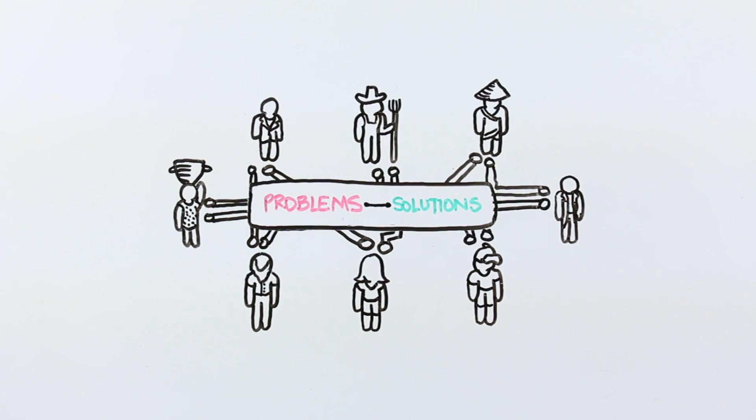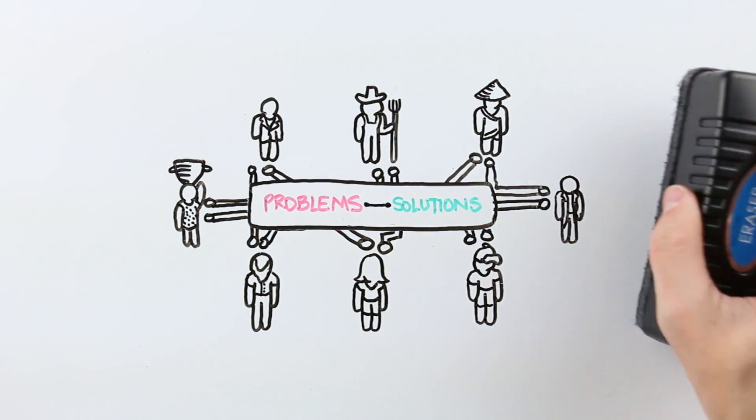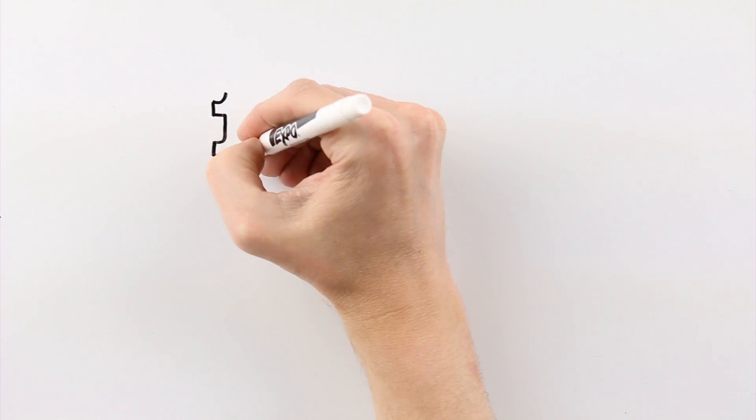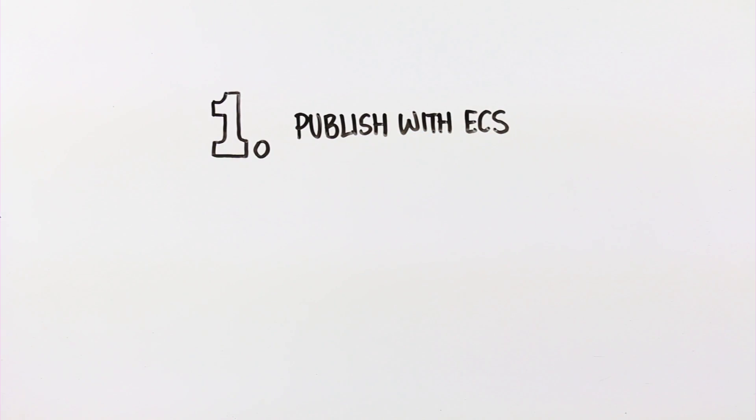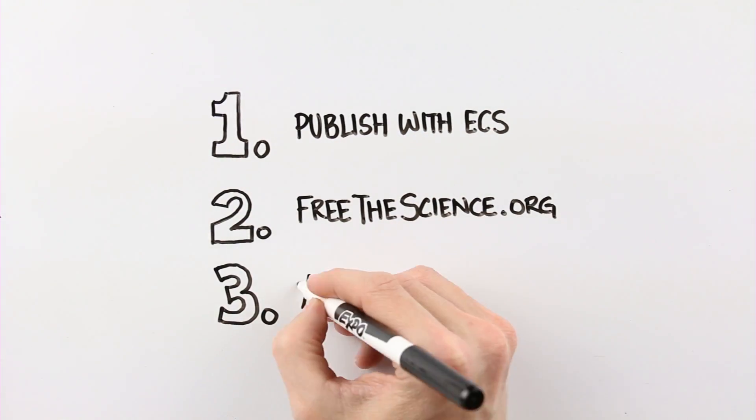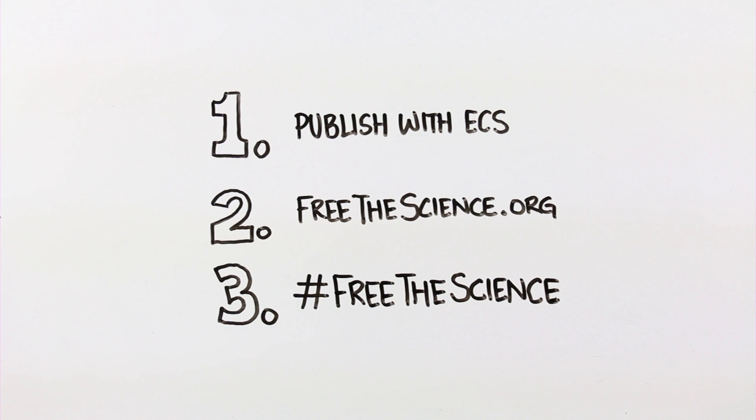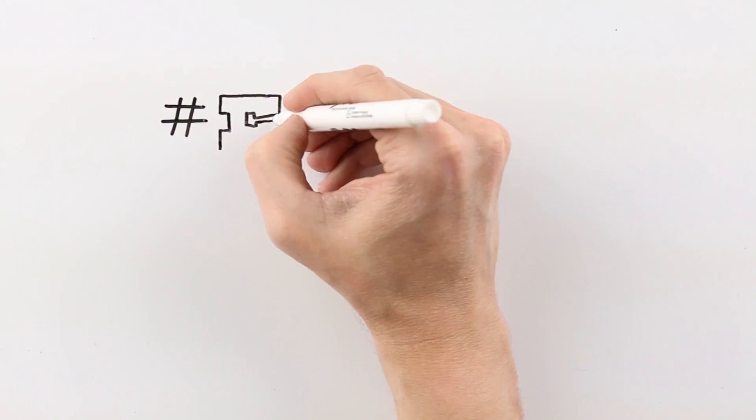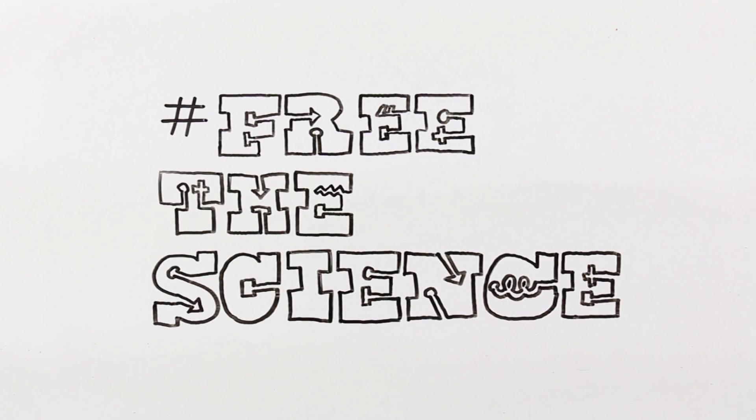We have a good start toward creating the fund we need, but we still need your help. You can free the science by publishing with us in our peer-reviewed journals, donating to ECS, and by being a voice for progress, openness, and solutions, whether you're a scientist or not. Together, we can free the science.